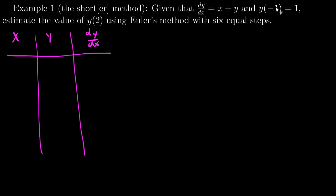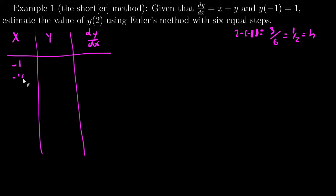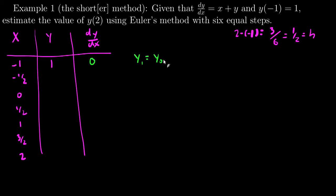Same process — the overall interval is 3, from negative 1 to 2, taken in 6 steps, so each step h = one half. My x-values are: negative 1, negative one half, 0, one half, 1, three halves, 2. The first y value is 1. To get dy/dx: negative 1 plus 1 equals 0, so y₁ = y₀ + (1/2)(0) = 1 plus 0 equals 1.